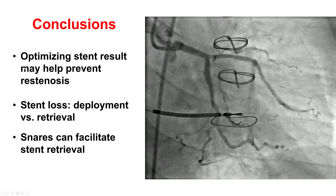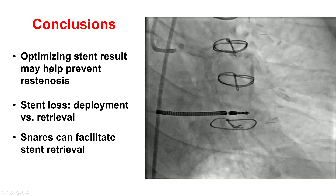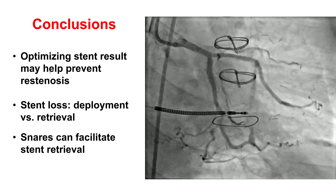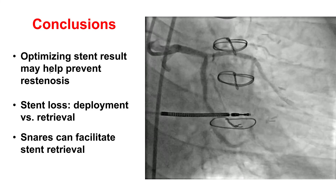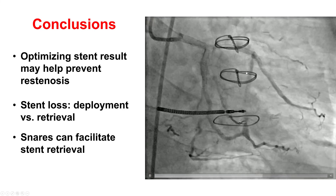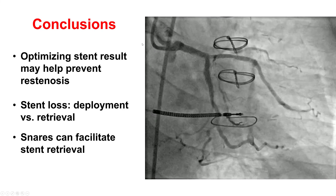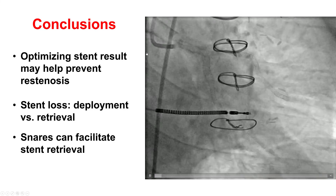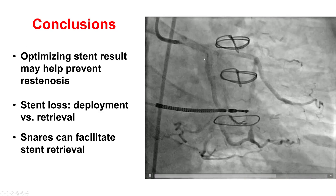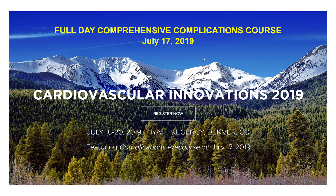Additional lessons from this case: First, it is critical to optimize the result — post-dilate the stent and ensure it is well expanded and well apposed in complex PCI, especially CTO-PCI. Second, in cases of stent loss, sometimes deployment may be better than retrieval, although in this case, because the stent was protruding into the aorta, retrieval was the preferred approach. Finally, retrieval can be facilitated by use of snares, as was done here. We invite you to the upcoming full-day complication course on July 17th, immediately before the Cardiovascular Innovations Meeting in Denver. Thank you.